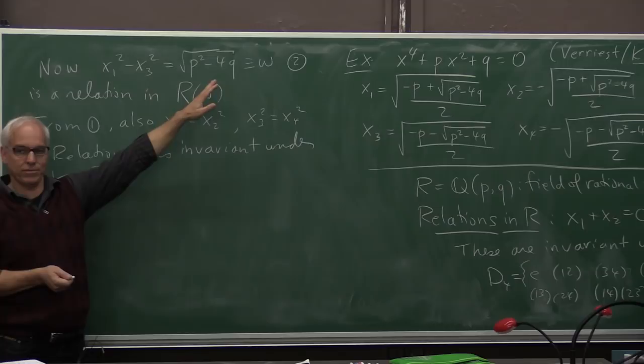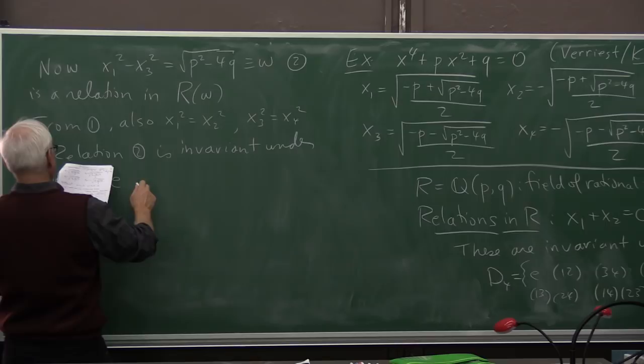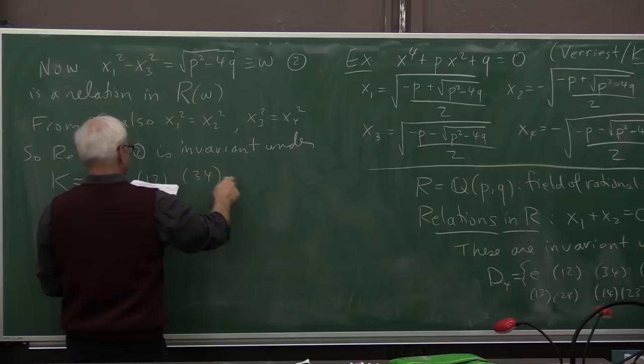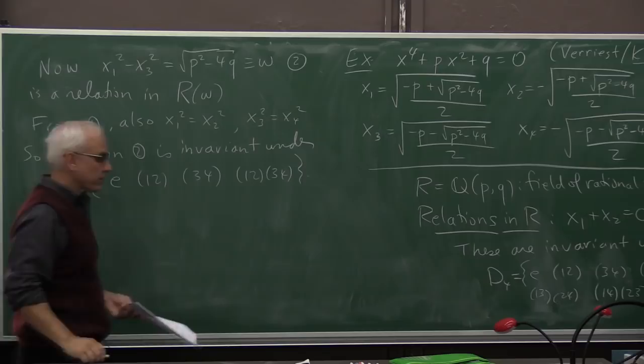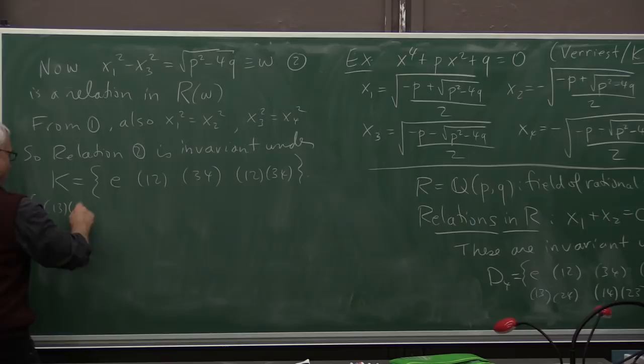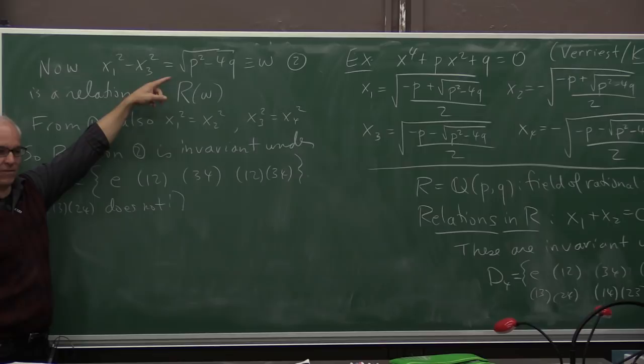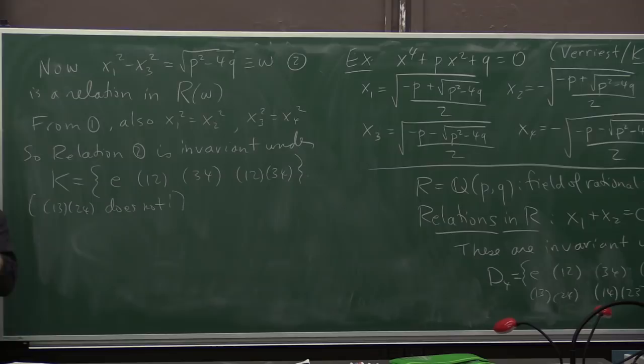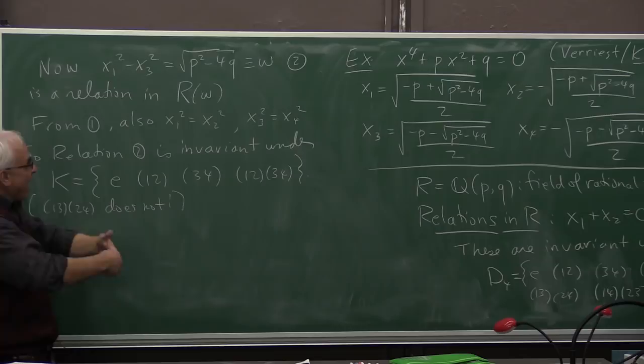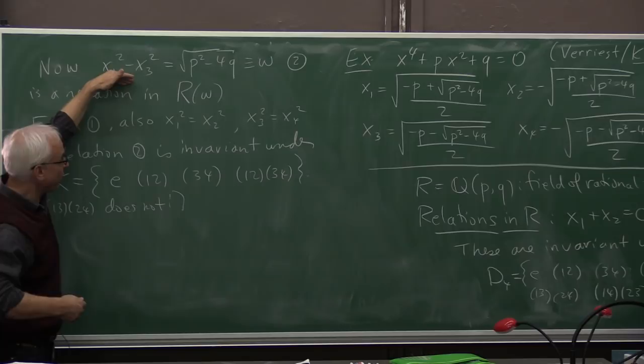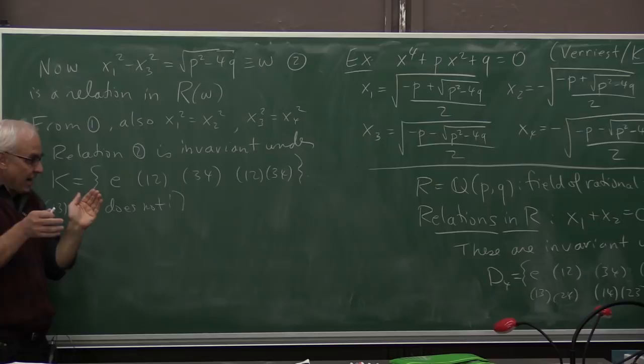Not all the permutations that we had previously are going to preserve this relation. Some of them will. The ones which will are E and (1,2)(3,4) and (1,2)(3,4). So note that (1,3)(2,4) does not. If we perform the operation of the permutation 1, 3 interchange and 2, 4 interchange, if we interchange 1 and 3 then this becomes its negative. So this is no longer a relation that's preserved under this particular transformation. So what's happened is that we've made our field bigger, we've gotten a new relation, but now the set of permutations that preserves our relations has shrunk from what I call D4 over there to what I'm calling K here now.